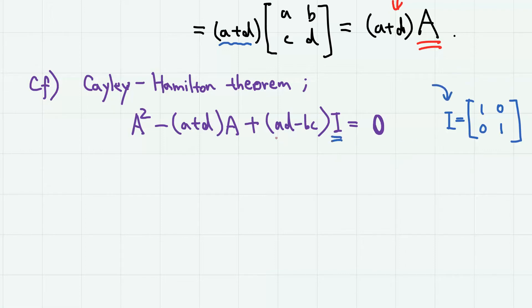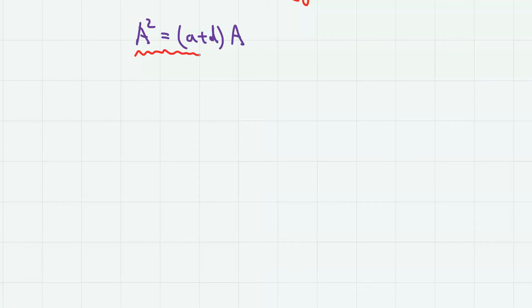If A does not have an inverse, this AD minus BC becomes 0, and therefore we have A squared equals A plus D times matrix A. Hence the same result. Now,